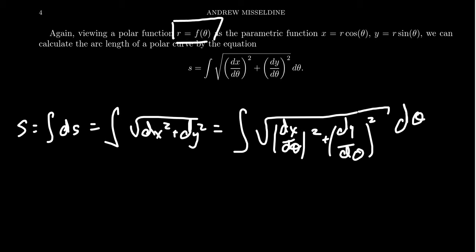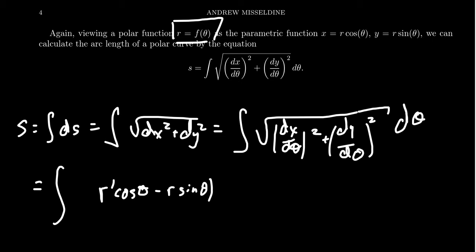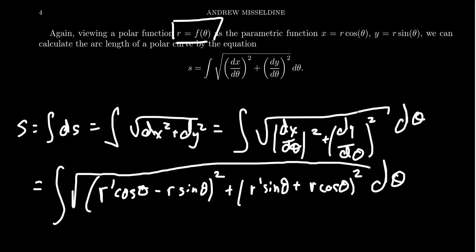Since r is itself a function of theta, the derivative of r with respect to theta will be involved. Taking the derivatives of x and y with respect to theta: dx/dθ gives r prime cosine theta minus r sine theta, and dy/dθ gives r prime sine theta plus r cosine theta. This all sits inside the square root.